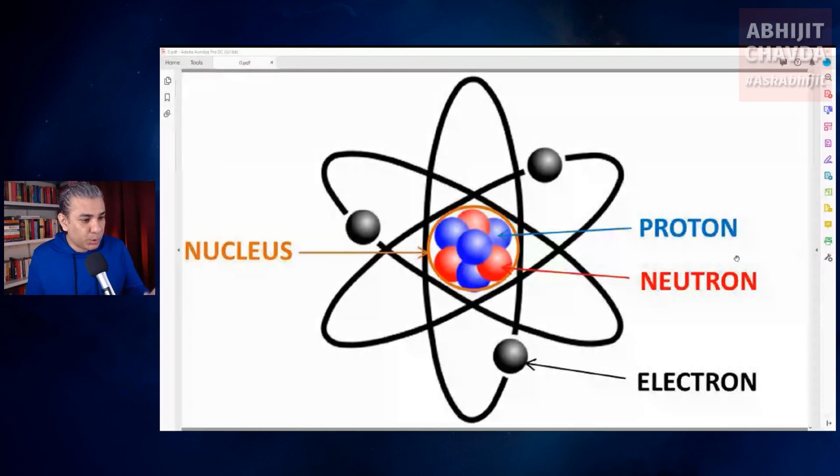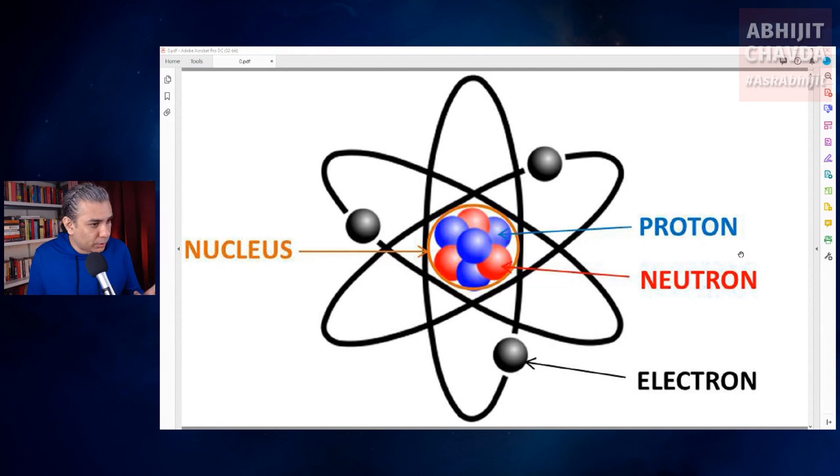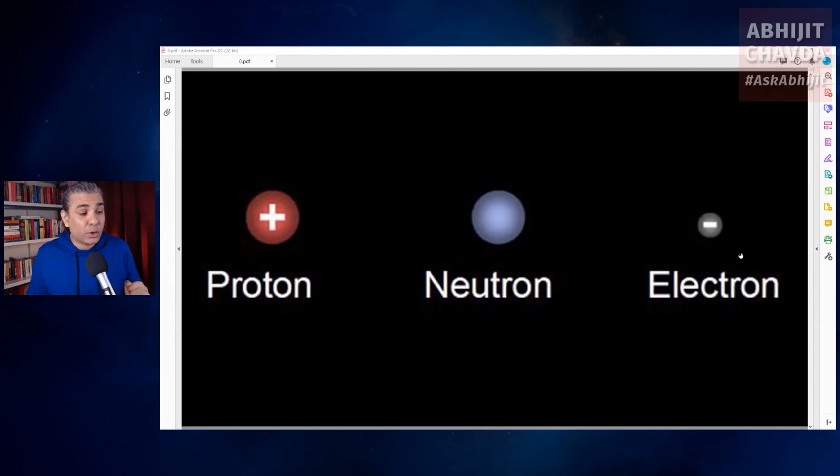Atoms are made up of protons, neutrons, and electrons. Protons, neutrons, and electrons are called subatomic particles.